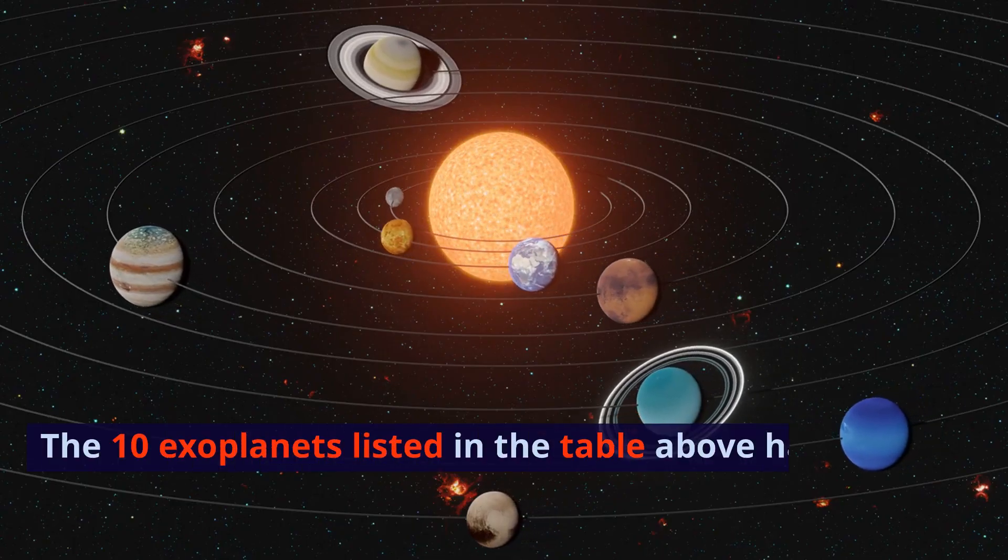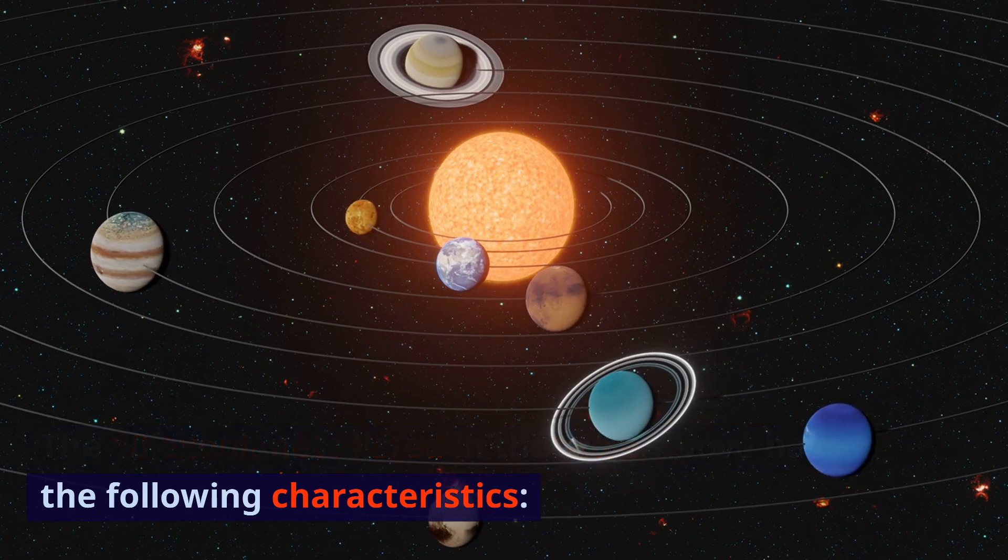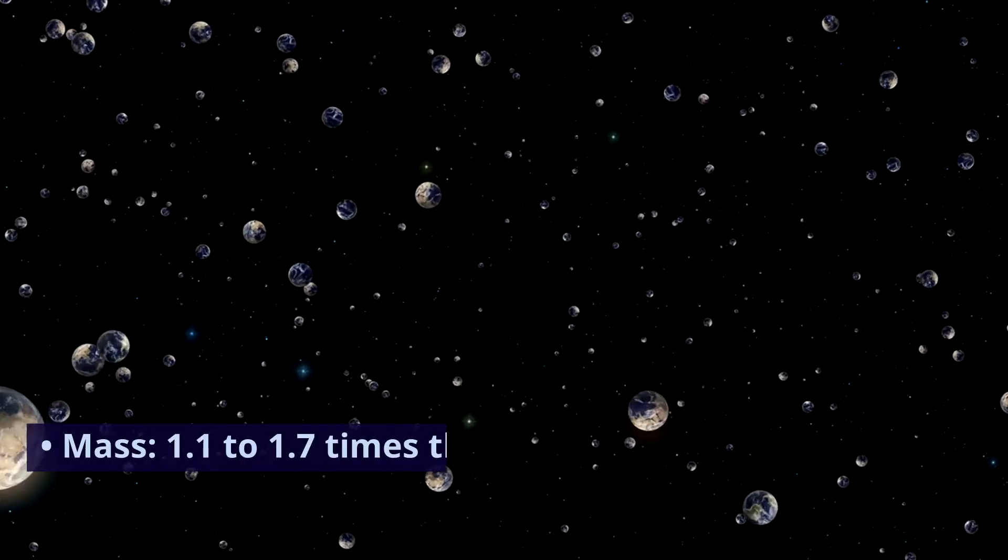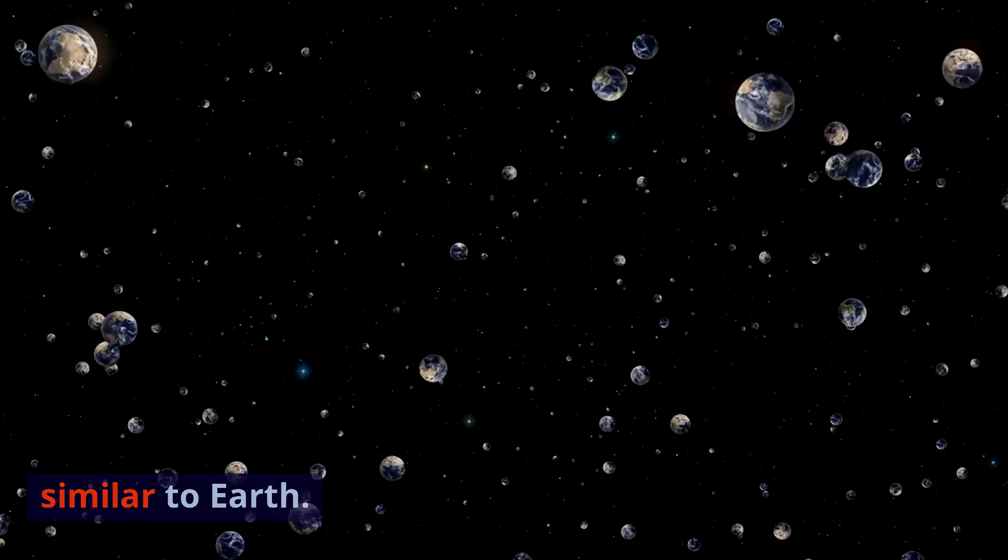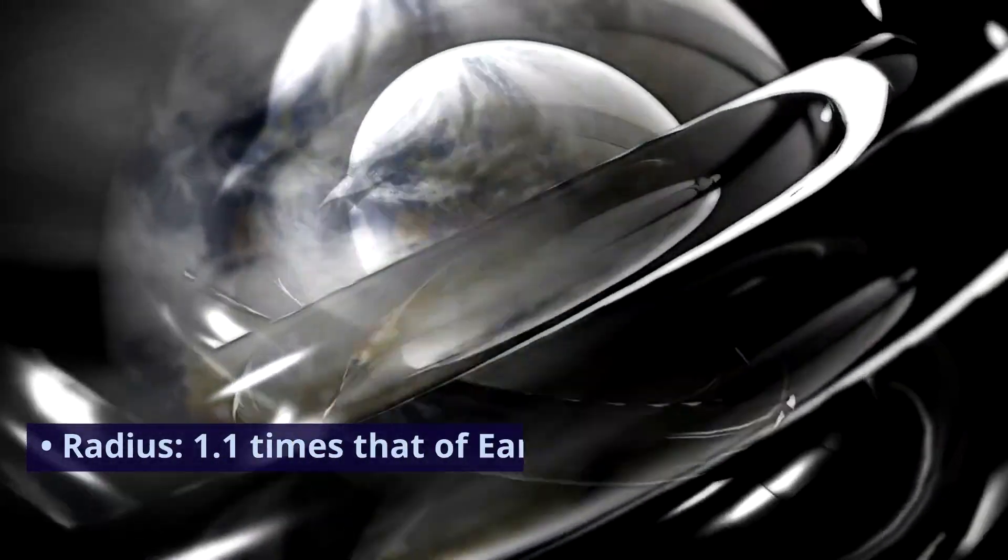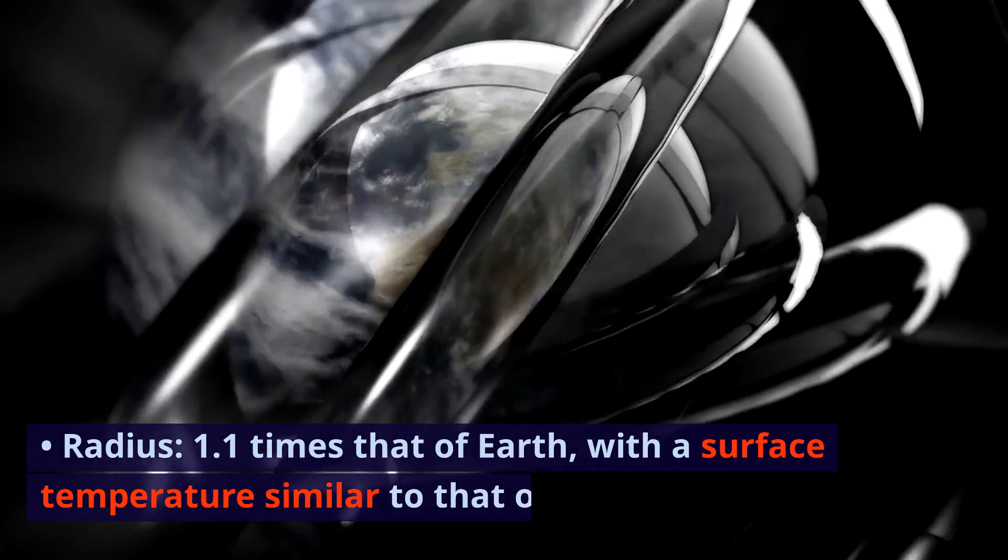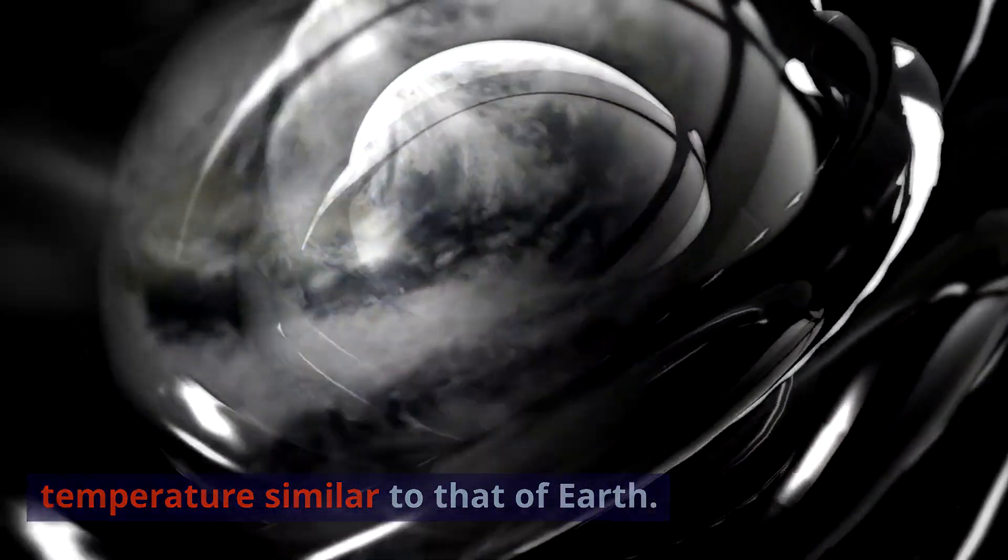The 10 exoplanets listed in the table above have the following characteristics. Mass: 1.1 to 1.7 times that of Earth, with a size similar to Earth. Radius: 1.1 times that of Earth, with a surface temperature similar to that of Earth.